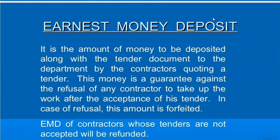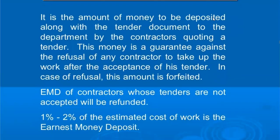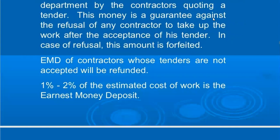This money is guaranteed against the refusal of any contractor — if anyone cannot or refuses to complete the contract after acceptance. So what happens in that case? We have to take the amount of money on the basis of the deposit. If the work is completed satisfactorily, then the amount of money will be refunded. If not, it will be forfeited.